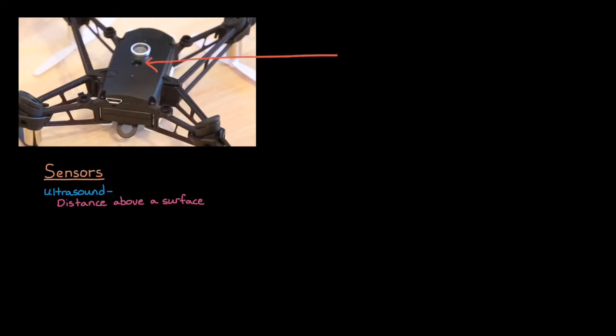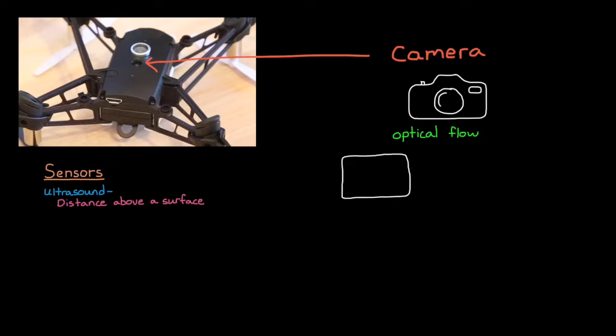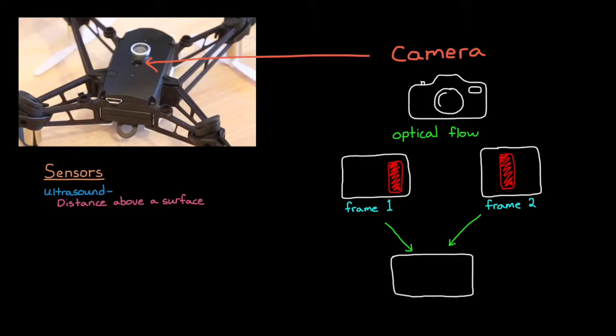The other sensor is a camera. It's taking images at 60 frames per second and using an image processing technique called optical flow to determine how objects are moving between one frame and the next. From this apparent motion, the mini drone can estimate horizontal motion and speed.